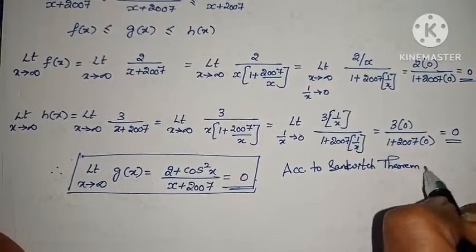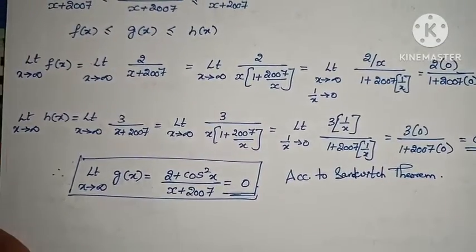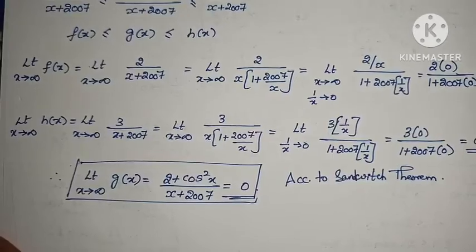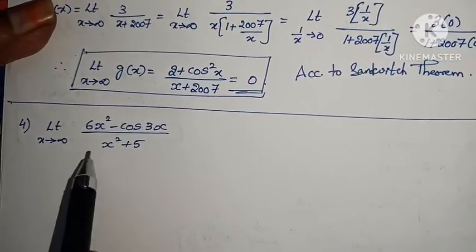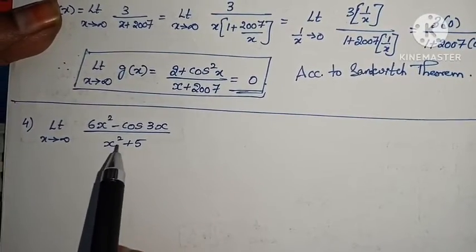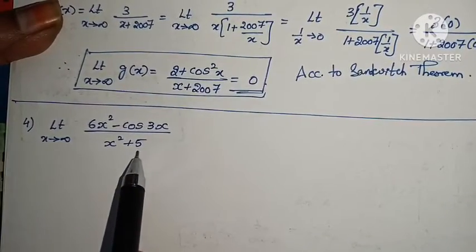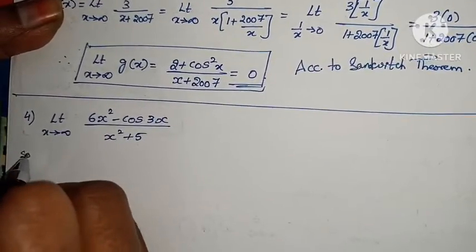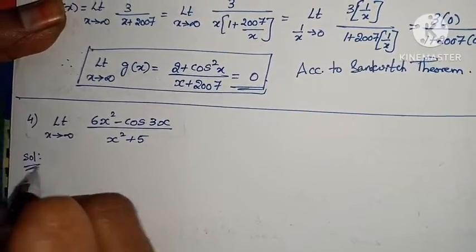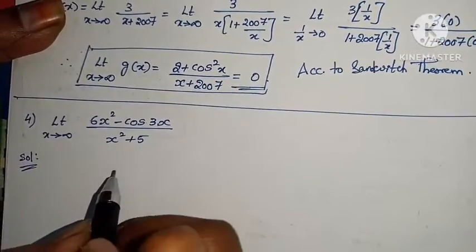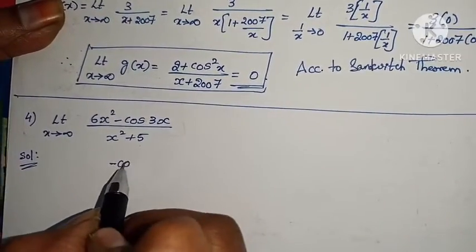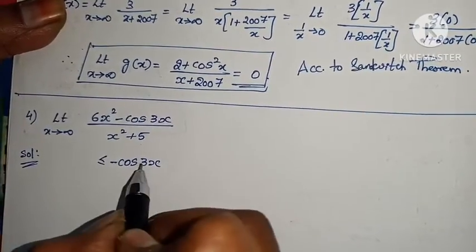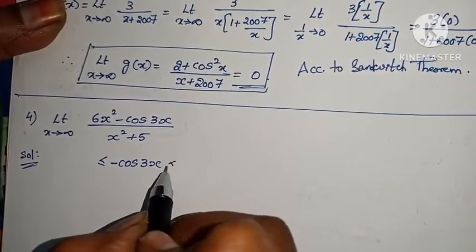Next problem. Limit x tends to infinity of (6x² - cos 3x) by (x² + 5). Here, minus cos 3x: 3 is a multiple inside cosine, and minus is the sign. We apply the Sandwich theorem since cosine is bounded.